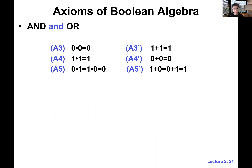We have three more axioms — A3, A4, A5 — which are basically the definition of AND. A3-prime, A4-prime, A5-prime are the dual forms, which are about the definition of OR. So these are the five important axioms of Boolean algebra. Once we know these, everything else can be derived from them.